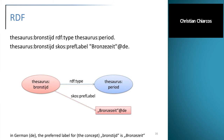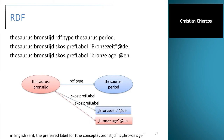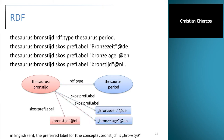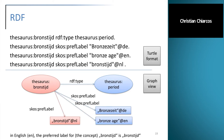We can add more information about the Bronze Age object — for example, we can say it has a preferred label in German ('Bronzezeit'), in English ('Bronze Age'), or in Dutch. In this way we can construct arbitrarily complex graphs. These are two possible visualizations: the Turtle format and a conceptual graph view in the mathematical sense.